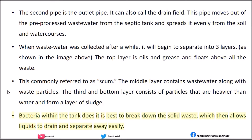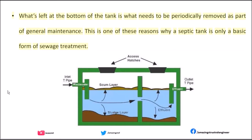The third and bottom layer consists of particles that are heavier than water and form a layer of sludge. Bacteria within the tank does its best to break down the solid waste, which then allows liquids to drain and separate away easily. What's left at the bottom of the tank is what needs to be periodically removed as part of general maintenance. This is one of the reasons why a septic tank is only a basic form of sewage treatment.